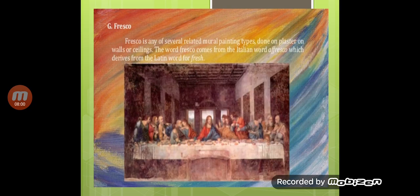The painting you can see on screen is called 'The Last Supper' — it was also mentioned in the previous lecture. Fresco is any of several related mural painting types done on plaster on walls or ceilings. The word 'fresco' comes from the Italian word 'a fresco,' which derives from the Latin word for 'fresh.'